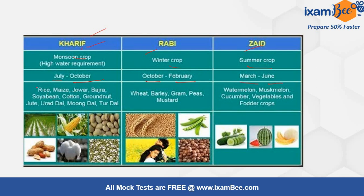Kharif crop examples are rice, maize, jowar, bajra, and soybean. From this figure, this is the field of rice, this is maize, this is soybean, this is groundnut, cotton, and here it is moong. So these all are the Kharif crops.